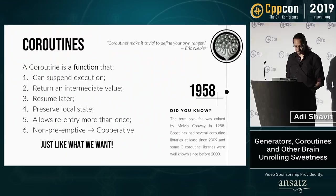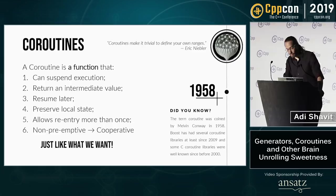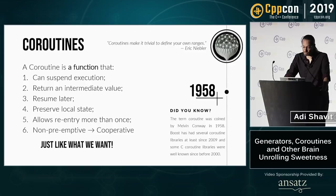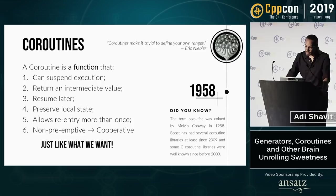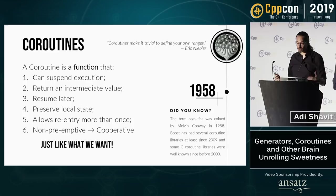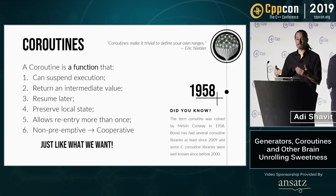And the answer is coroutines. Coroutines are not a new concept — they were coined by Melvin Conway in 1958, and Boost has had several coroutine implementations over the years. A coroutine is a function that can suspend execution, returning an intermediate value, and be resumed later from the same point by re-entry. In contrast to threads, which are preemptive, coroutine switches are cooperative — the programmer controls when this yielding and suspension happens, and the kernel scheduler is not involved.